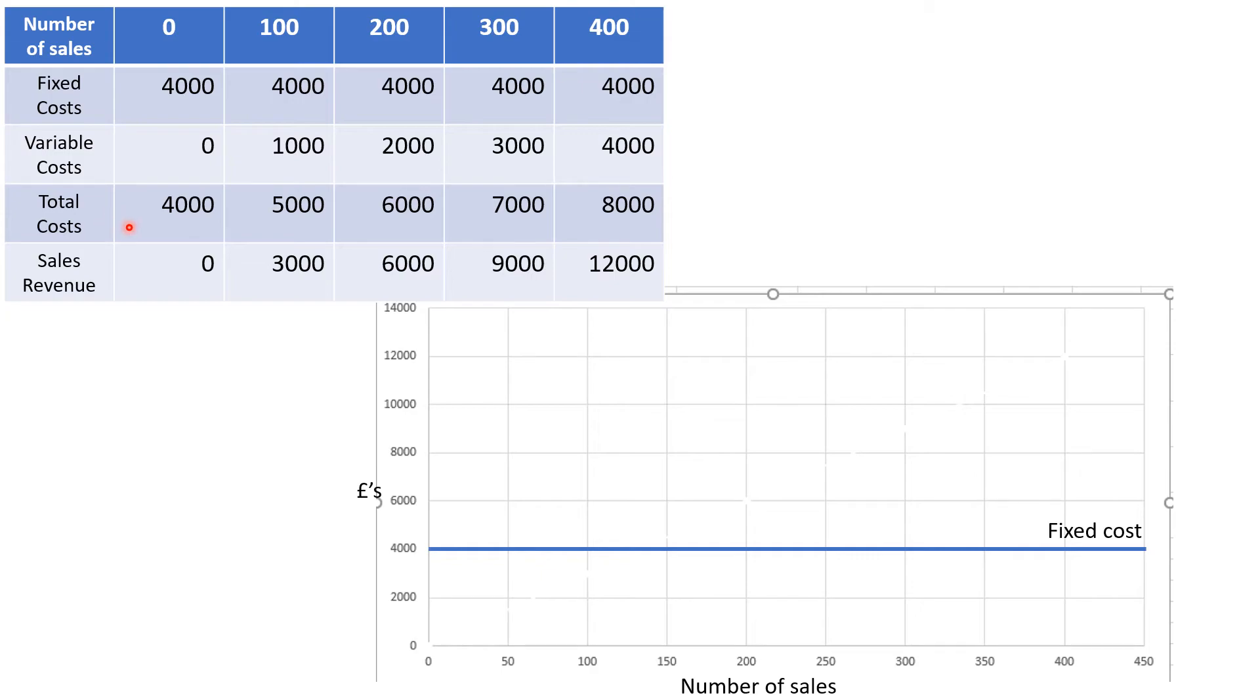Now total cost always starts where the fixed cost cuts the y-axis, because if they make none, the total cost will only be the fixed cost at £4,000. And then you can see that at 100 it will be £5,000. So this one's not so easy because it hasn't got £5,000 on the scale. So if I go to 200, it's £6,000.